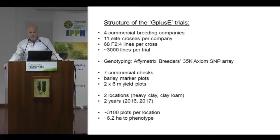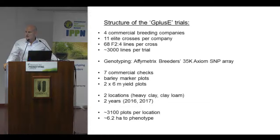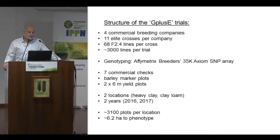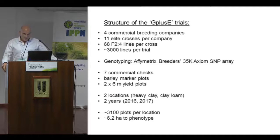The structure of our project is as follows. We're collaborating with four commercial breeding companies representing about 80% of the UK market share. Each company performed 11 crosses with elite lines, from which they chose 68 F2-derived F4 lines per cross, leading to about 3,000 lines per trial. The scale of this is required to really test the accuracy of these genomic prediction algorithms, though it does present a challenge for phenotyping.